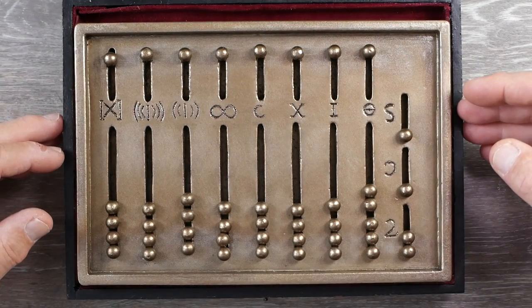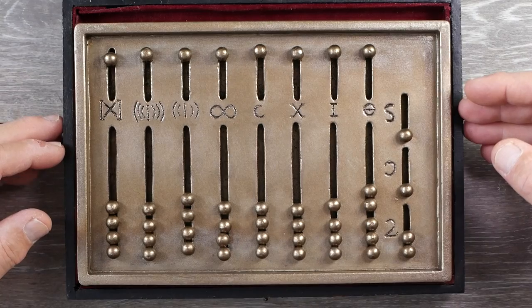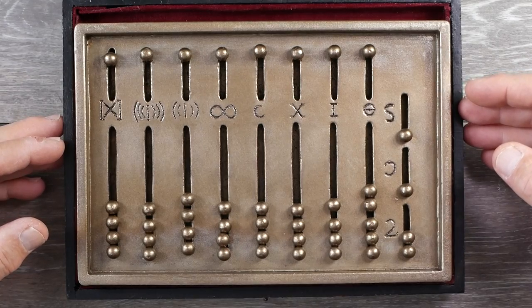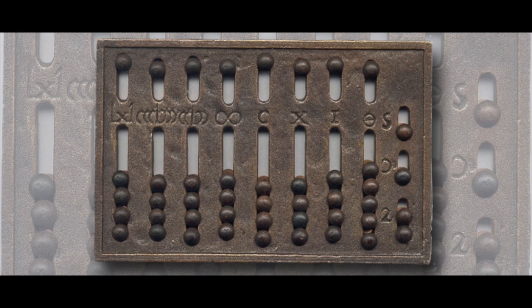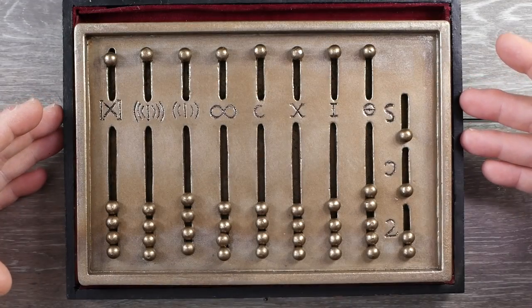Michael's example of a Roman hand abacus is patterned after an example that is in the Bibliothique Nationale de France in Paris. So he's done a really great job of reproducing this.